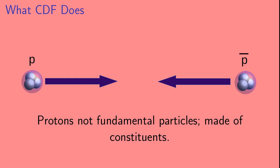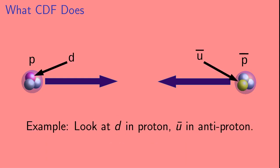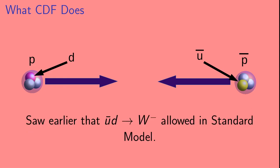Now protons are known to not be fundamental particles. They are made of other particles. For example, we can take a look at a down-type quark in the colliding proton, and an up-type anti-quark in the antiproton. We saw a minute ago that the standard model allows an up-type anti-quark and a down-type quark to collide and produce a W-.